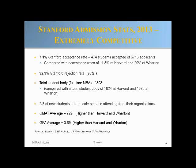The overall student body at Stanford is 803, compared with 1,824 at Harvard and 1,685 at Wharton. Another daunting statistic: two-thirds of all new students are the only persons attending from their organization. The GMAT average is 729 and the average GPA is 3.69, both only slightly higher than Harvard and Wharton. So something beyond GMAT and GPA drives admissions — that something is uniqueness of the candidate and fit with Stanford.